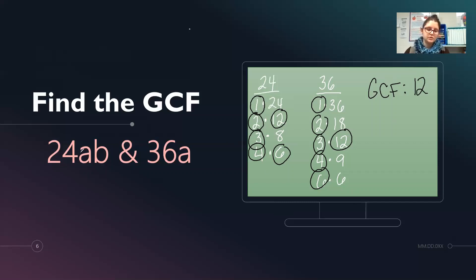The other thing we have to look at is our AB and our A. So what's common? I've got an A in each term. So that would go with the 12. So my total greatest common factor is 12a.